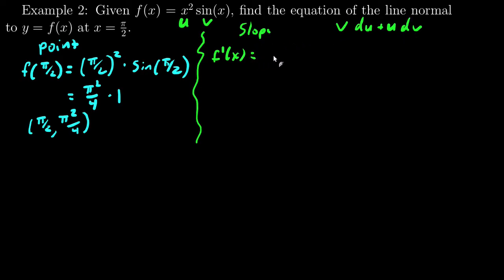So, in here, that will be the sine of x times the derivative of u. So, that's going to be times 2x plus u, which is x^2, times the derivative of v. The derivative of sine is cosine.